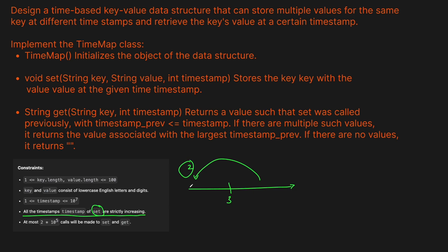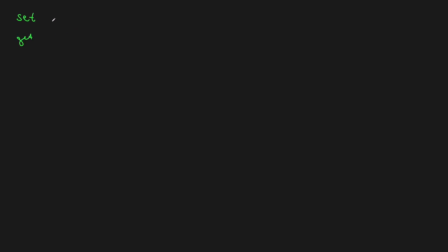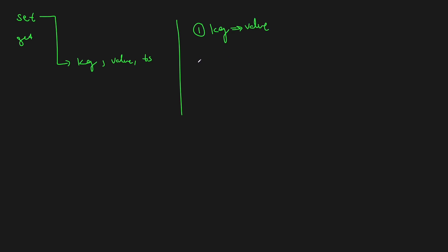We'll walk through the intuition and then code it up. There are two methods to implement: the set method and the get method. For set, we're given a key, a value, and a timestamp. We're going to use two dictionaries: the first maps a key to all the values for that key, because we can store multiple values per key. The second maps a key to all the timestamps for that key, because we need to do lookups based on timestamp.